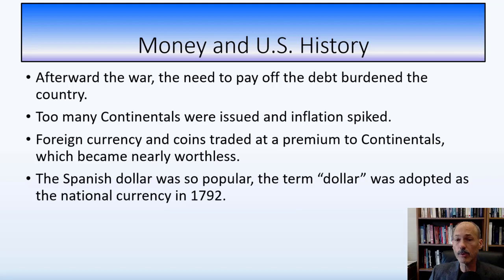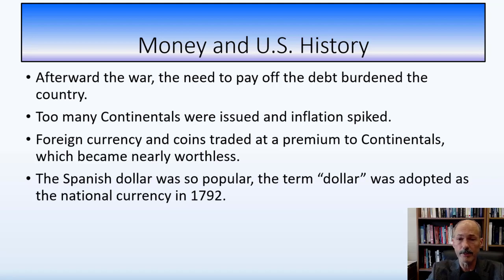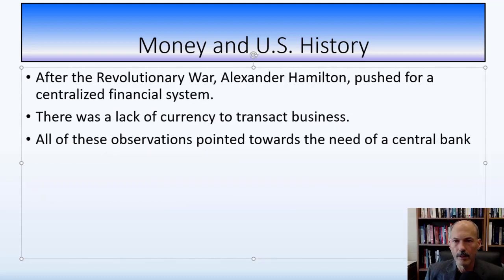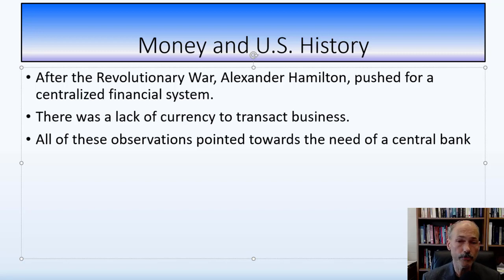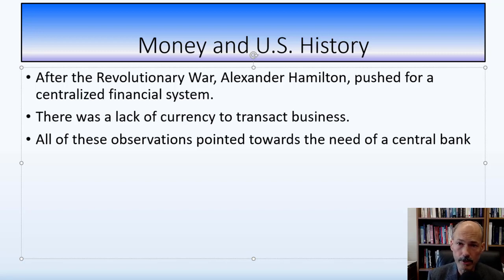The government issued so many Continentals partly because they had trouble taxing the states, and support for the war varied. After the war, paying off the debt burdened the country. Too many Continentals caused inflation to spike. Foreign currency and coins traded at a premium to the Continentals, which became nearly worthless. The Spanish dollar was so popular that the term 'dollar' was adopted as the national currency in 1792.